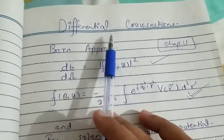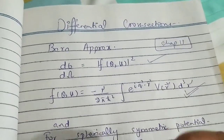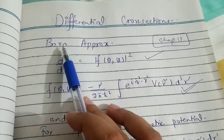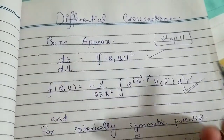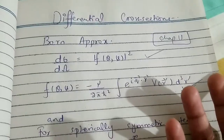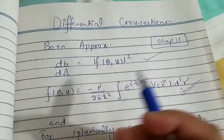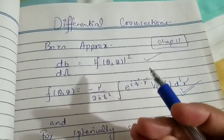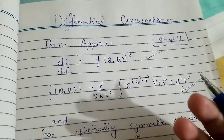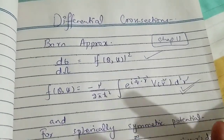Hey everyone, I hope you are doing well. This video is about differential cross-section — cross-section in general — and the related problems. Here we'll do problems from the book Griffiths chapter 11, the exercise problems. Problem 11.3 solution is already uploaded, so you can check out the playlist 'Quantum Mechanics' to find that problem. I have also added English subtitles so you may not find difficulty understanding the Urdu language.